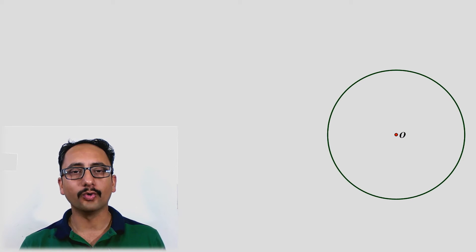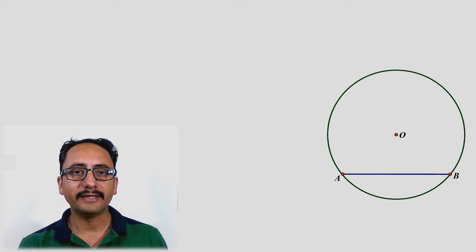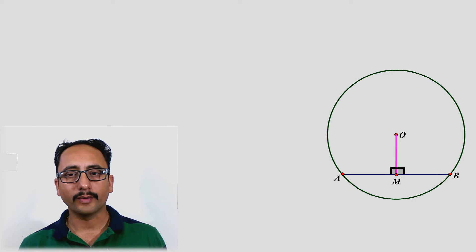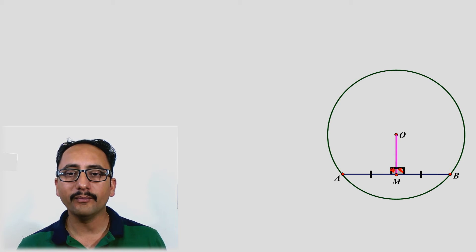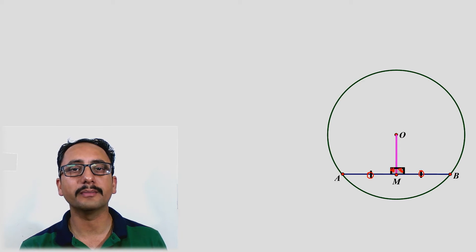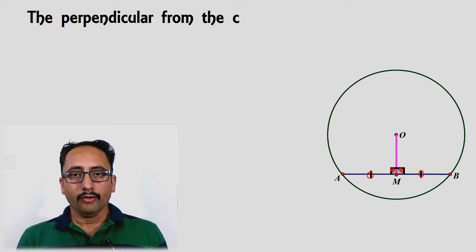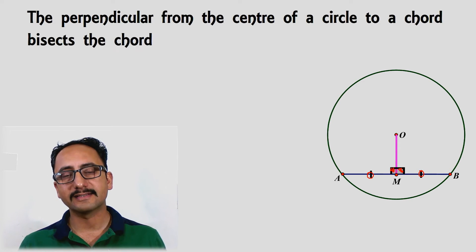Welcome back. This time we are going to take another theorem which states that a perpendicular drawn from the center of the circle to a chord bisects the chord. If we have a circle with center O, a chord AB, and OM is perpendicular to AB, then OM will bisect AB, meaning AM will be equal to MB. The statement of the theorem is: the perpendicular from the center of a circle to a chord bisects the chord.